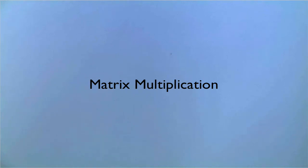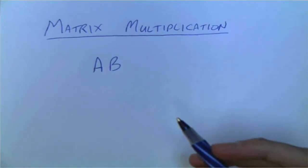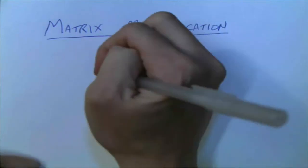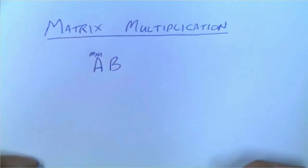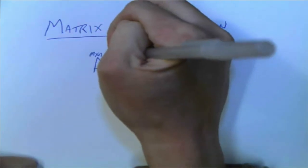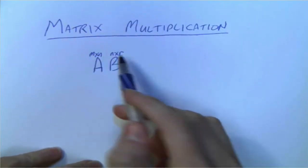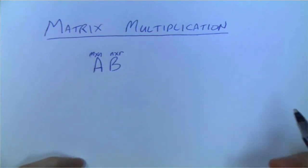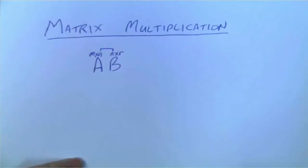Now we're going to talk about matrix multiplication. Suppose we've got two matrices, A and B, and we need to have their order. So let's say matrix A has order M by N, and matrix B has order N by R. In order to multiply matrices, these two inside numbers have to be equal. If they are not equal, then we cannot multiply these two matrices together.